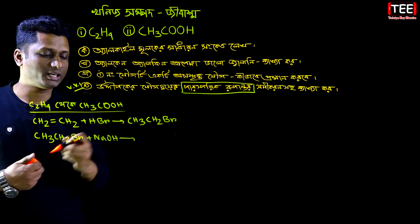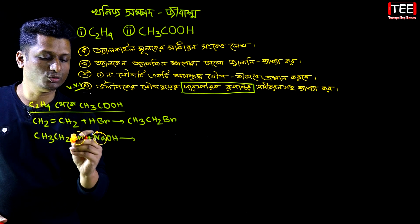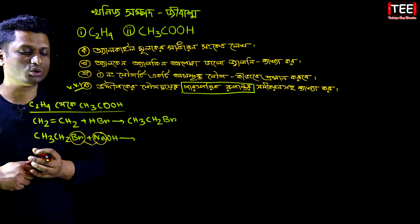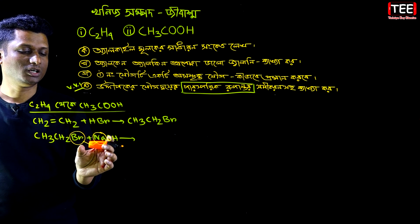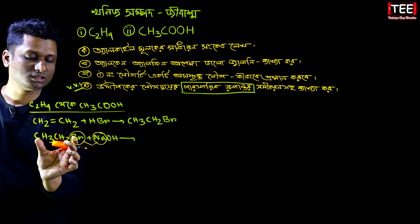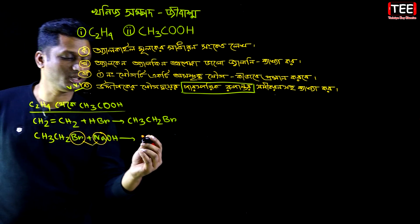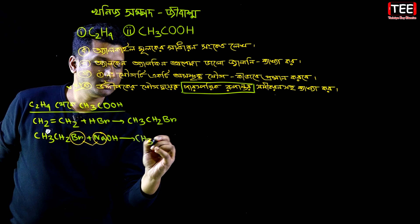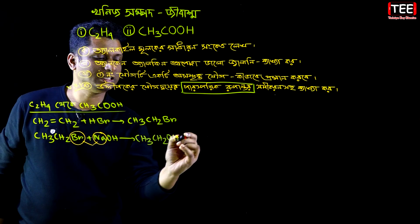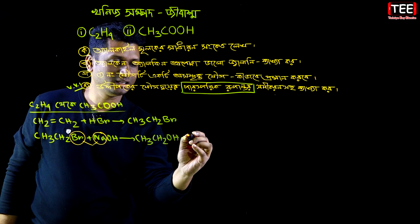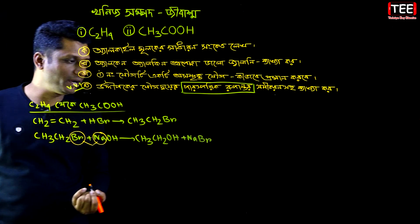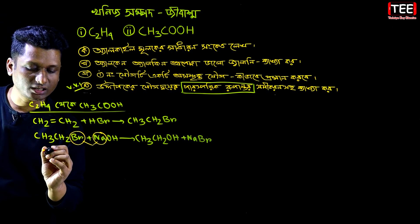The products are Sodium Bromide and Alcohol — specifically CH₃CH₂OH, Ethanol. Ethanol and Sodium Bromide are formed in this reaction.